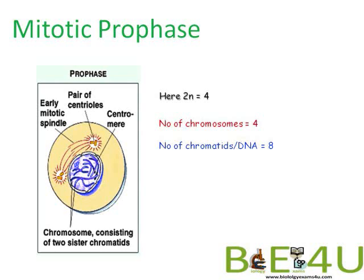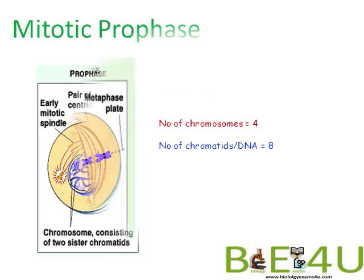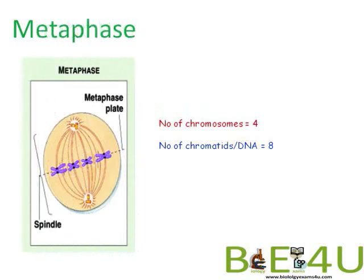Now let us look at the next phase of mitosis: metaphase. Here the chromosomes are arranged at the metaphase plate. The number of chromosomes is 4, as the number of functional centromeres is 4. The number of chromatids or DNA molecules is 8, as each chromosome has two chromatids held at the centromere.